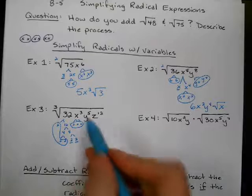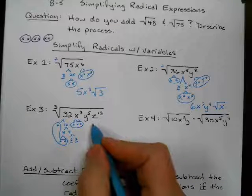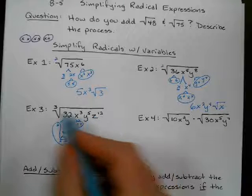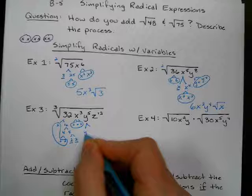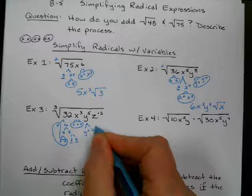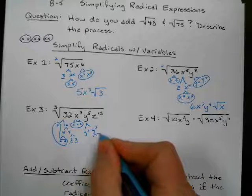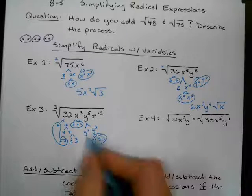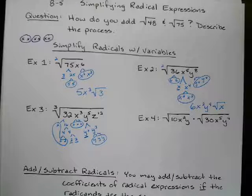What about this one? Does 3 go into 5? No, it doesn't. So what can I do to make an exponent for the y where 3 will go into it? Well, what I can do is split this up into y squared and y to the third. And then I've got three y's right here. y times y times y. And I can take those outside. But I've got this y to the second that I could not take outside.